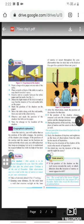The activity is about the experiment of the shadow. First step: Paste large white paper on one side of the table. Step two: Place a torch in front of the table in such a way that it won't move. Third step: Stand a rod or a candle between the white paper and the torch, as in Figure 1.1.